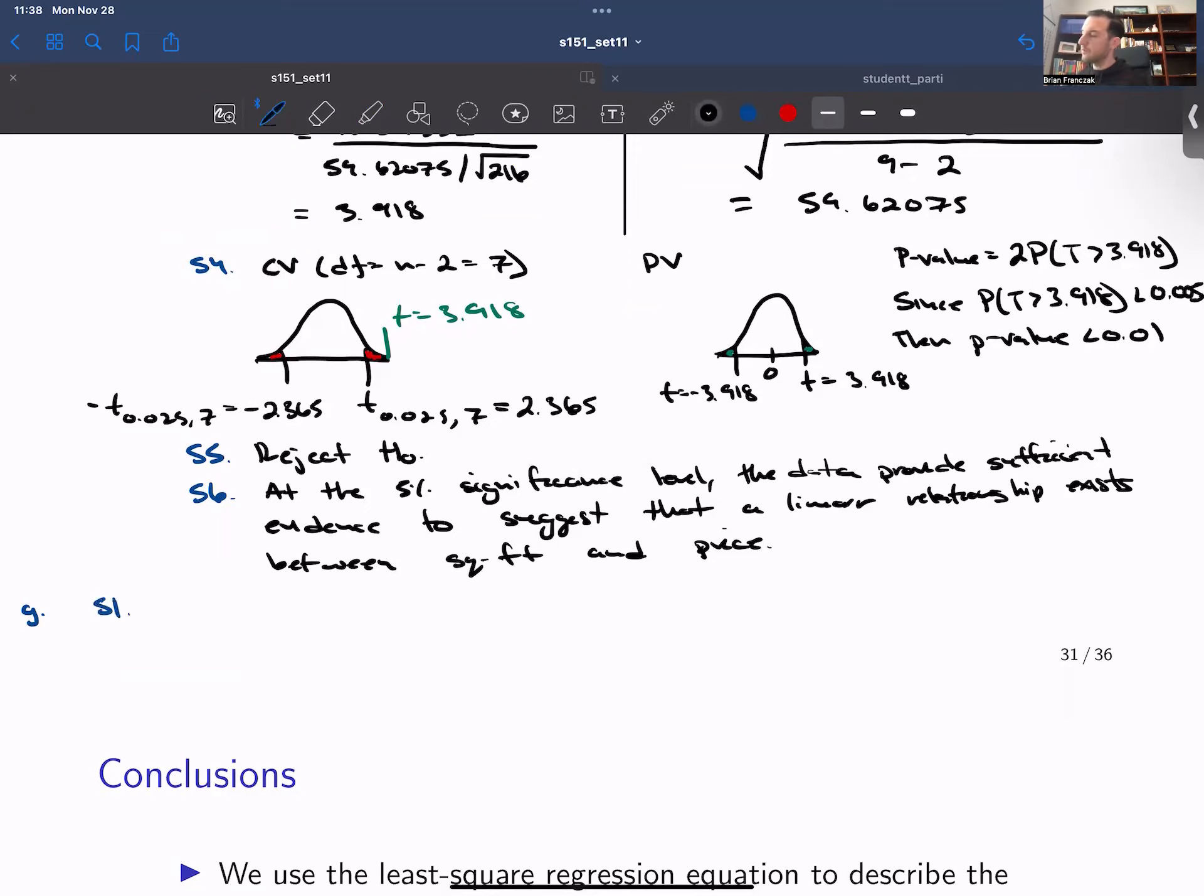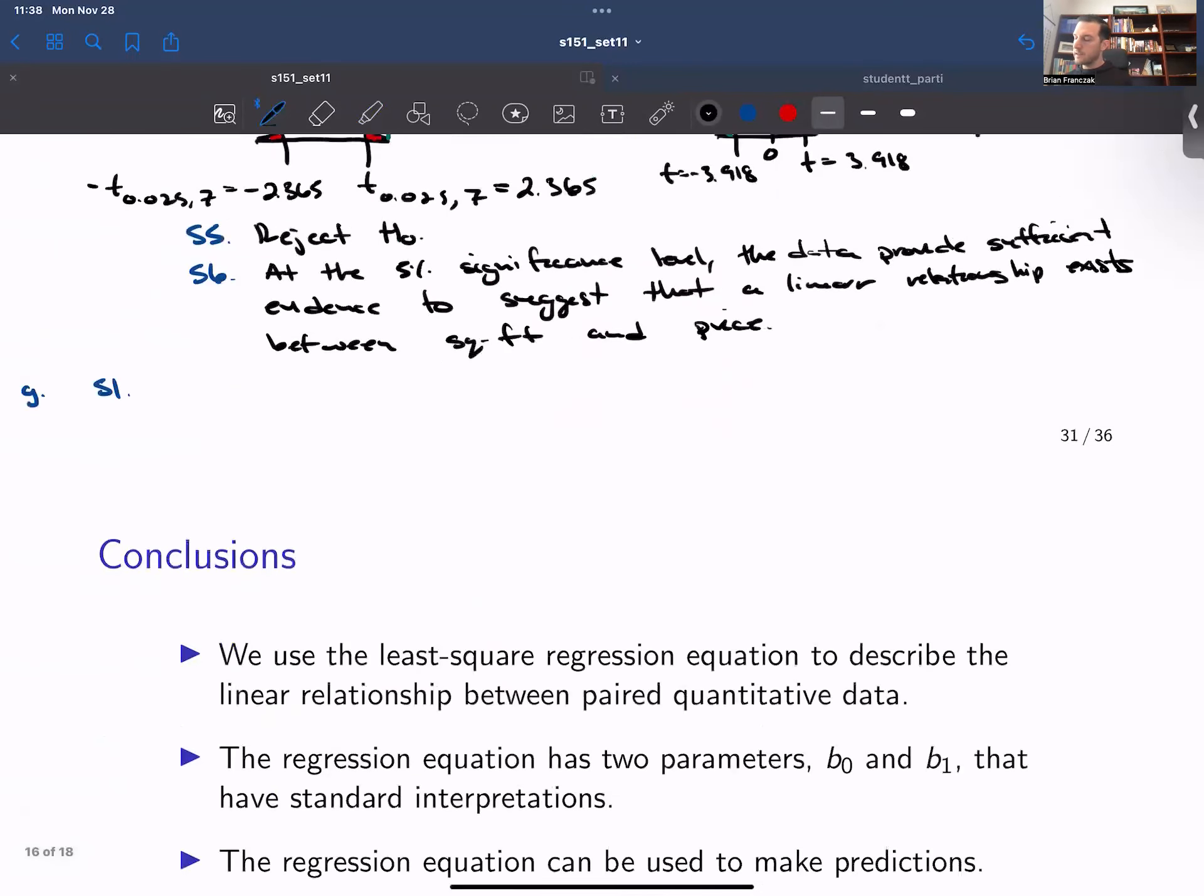Part G I want to compute the 95% interval. The assumptions are the same as in part F. So it's a 95% interval. So we have alpha 0.05. So this means that our T value is going to be T on 0.025 and 7. So this is the same critical value that we used above 2.365.